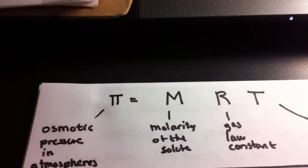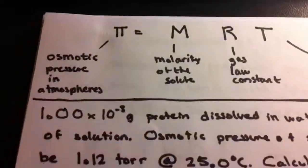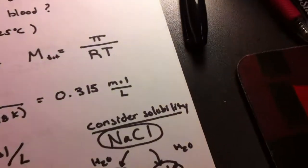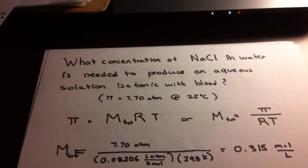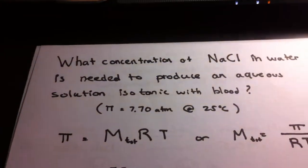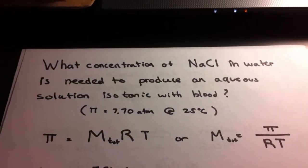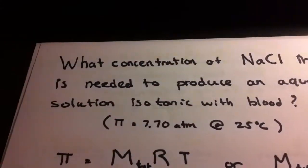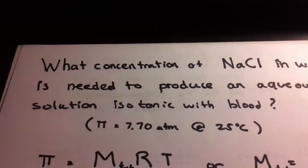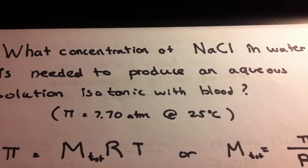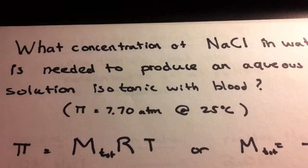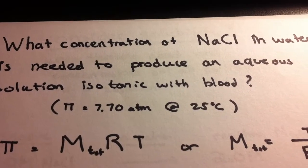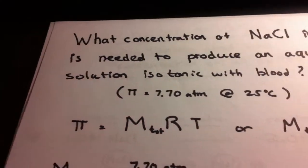But we have to ask, what do we mean by molarity of the solute? The problem is that different ionic substances have different solubilities. For example, we might ask: what concentration of NaCl in water is needed to produce an aqueous solution isotonic with blood? The pressure in this case would be 7.70 atm at 25 degrees Celsius.